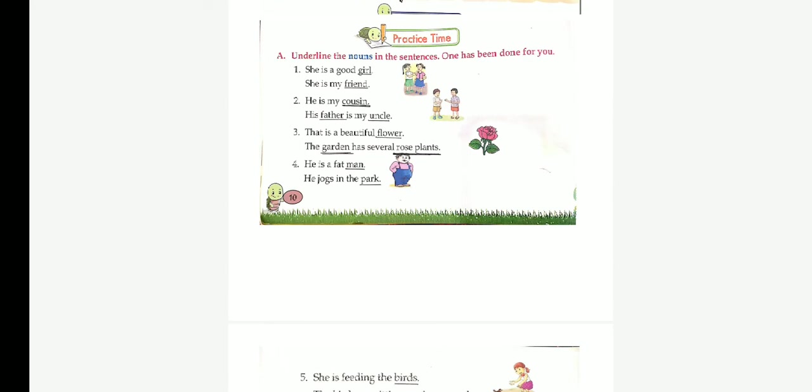Two nouns. Naming words. Nouns are called naming words. Nouns are the names of people, animals, places or things. First practice time. First exercise. Underline the nouns.